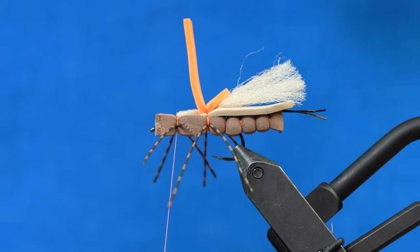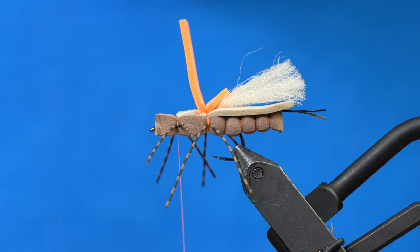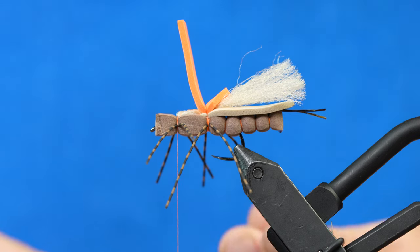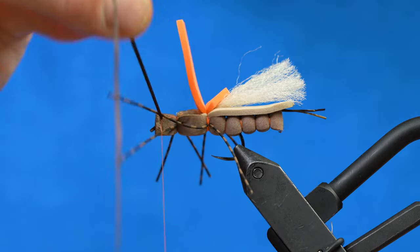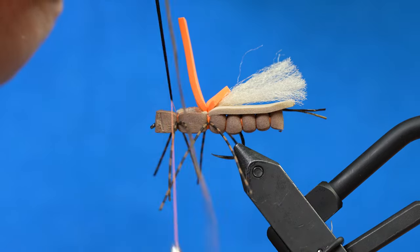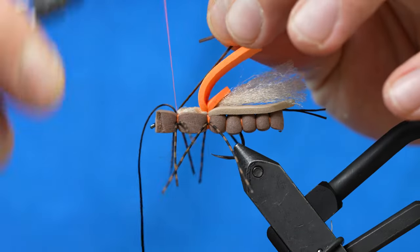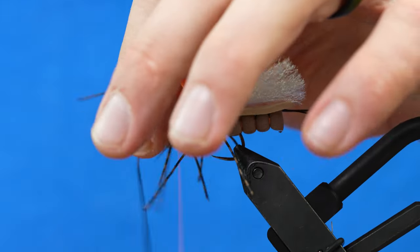And then we'll get some more span flex for the antenna. We'll do the same technique, fold it in half around the thread, and secure that with two wraps. We'll trim those guys a little long.